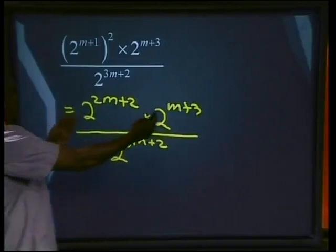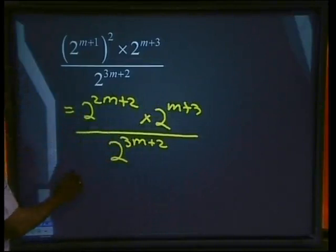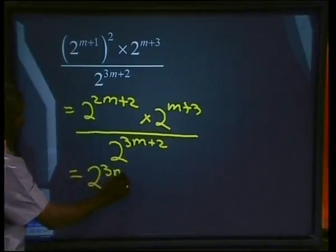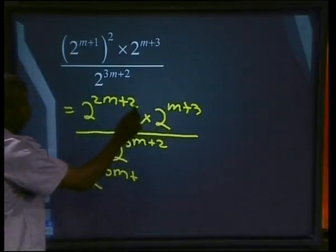So that means we can apply our first law there where it says if we're multiplying, we can simply add the exponents. That will give us 2 to the power of 3m. That will be m plus 2m plus 2 plus 3,